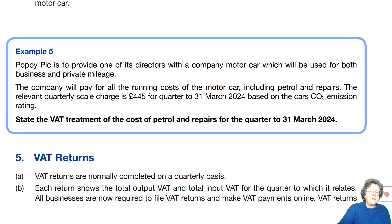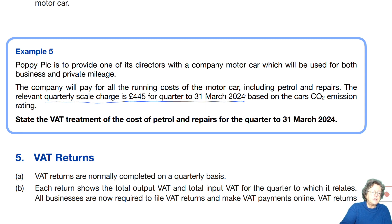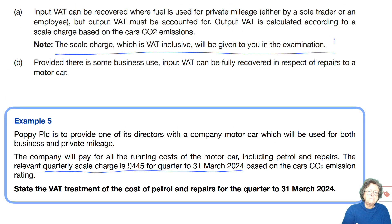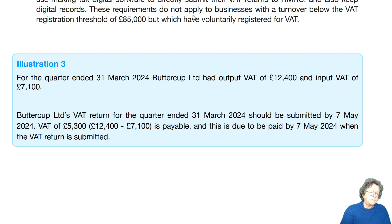Example number five: Poppy PLC is to provide one of its directors with a car which can be used both privately and for business purposes, and they will pay all running costs including petrol and repairs. The relevant VAT quarterly scale charge for the quarter to March 2024 is based on the car's CO2 emissions — that figure is given to you as explained. We are to state the VAT treatment of the cost of petrol and repairs for the quarter ended 31st of March.